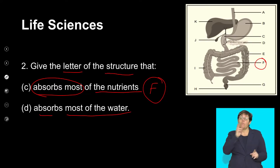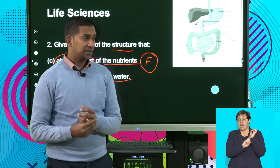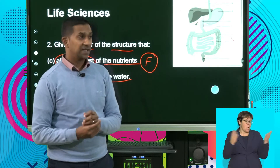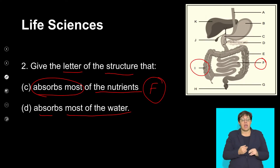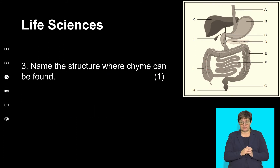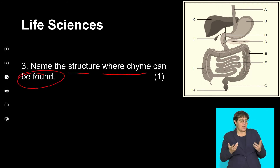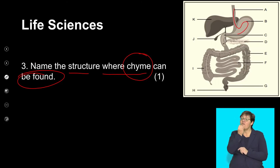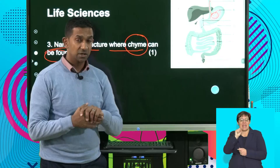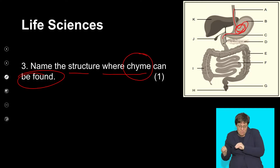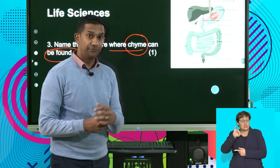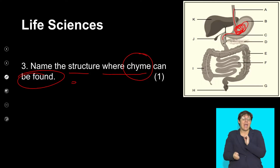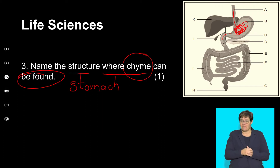Absorbs most of the water: the last part of the alimentary canal, which is the colon, absorbs most of the water. Most of that water is absorbed in the ascending colon, so you could put down the letter I. Name the structure where chyme can be found: the food moves into the stomach and mixes with the gastric juices — that mixture is called chyme. So the structure where chyme is found is the stomach, labeled with the letter B.